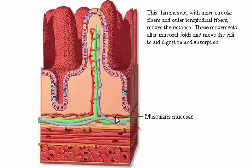This thin muscle, with inner circular fibers and outer longitudinal fibers, moves the mucosa. These movements alter mucosal folds and move the villi to aid digestion and absorption.